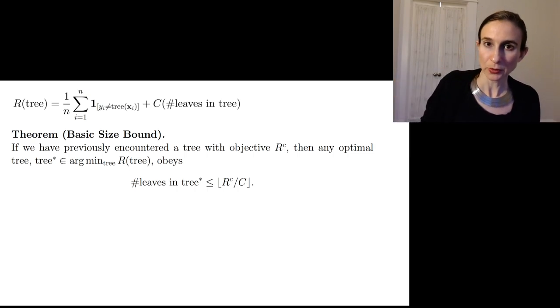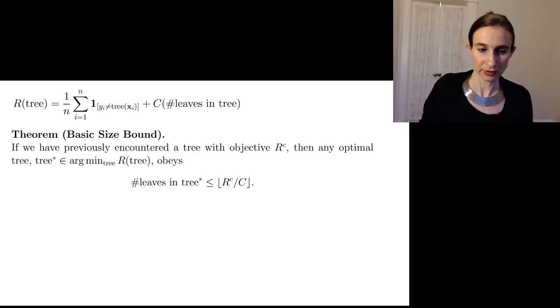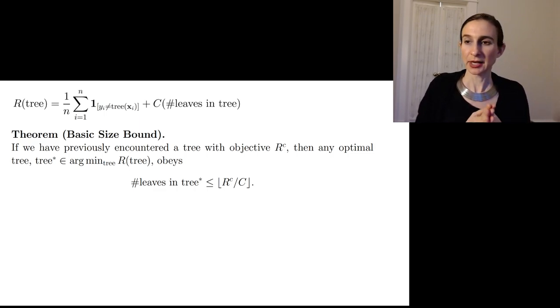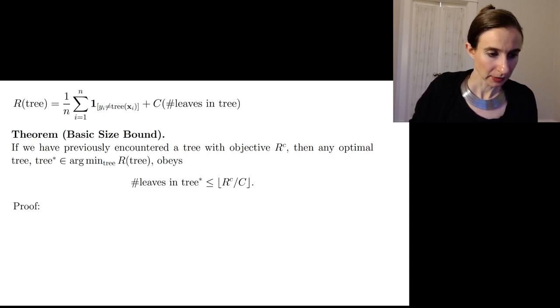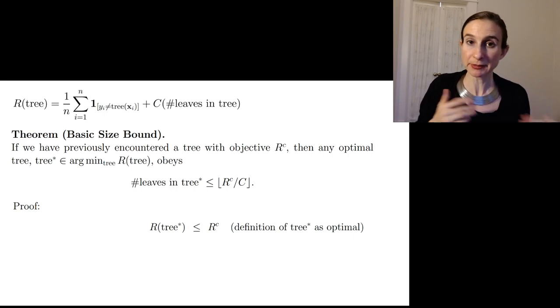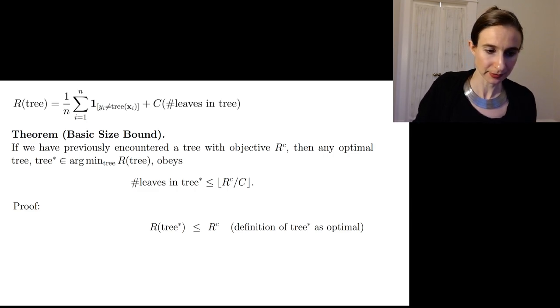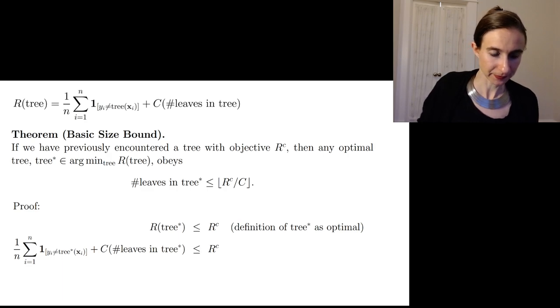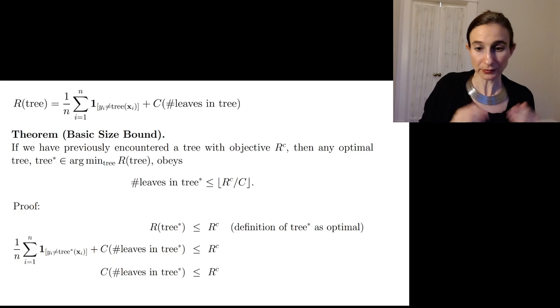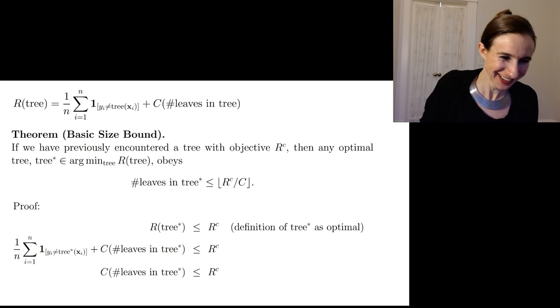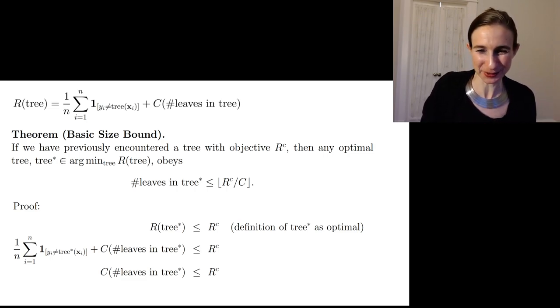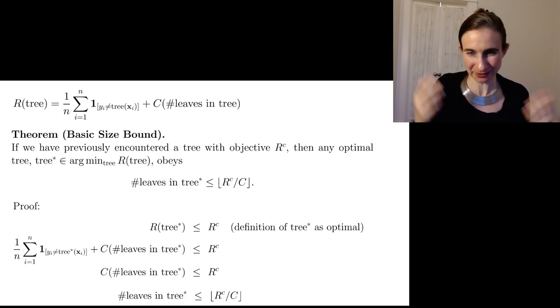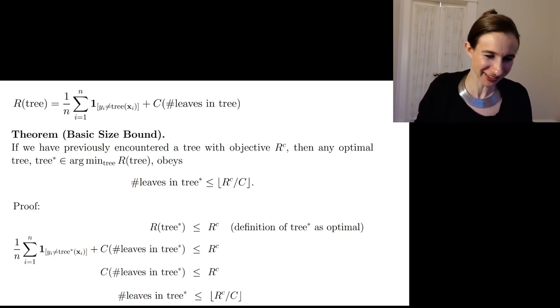Okay, so what that's telling us is that once I have gotten a tree with objective R^C, I never have to search trees that have more leaves than this, because I know that they will be suboptimal with respect to the objective. Okay, I'll show you the proof. It's very very simple. So again, tree star is the minimizer of R, so that's why it's always on the lower end. And then this is the definition of R that I just put in there. And then two terms is always bigger than one term, especially when the other term is positive or non-negative at least, right? The error is non-negative, so if we eliminate it, it only goes lower. And then from there it's very simple. You just divide both sides by the regularization parameter. You know that the number of leaves is integer, so you put a floor on it. And that's it, that's the whole theorem.